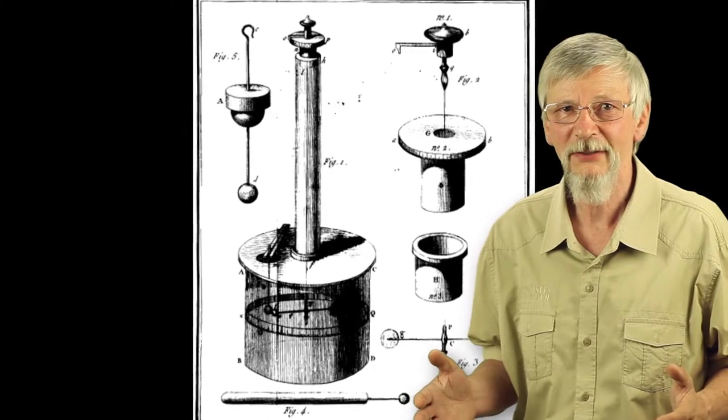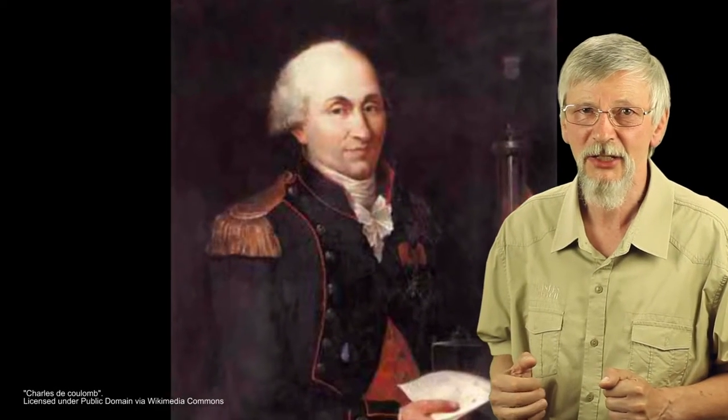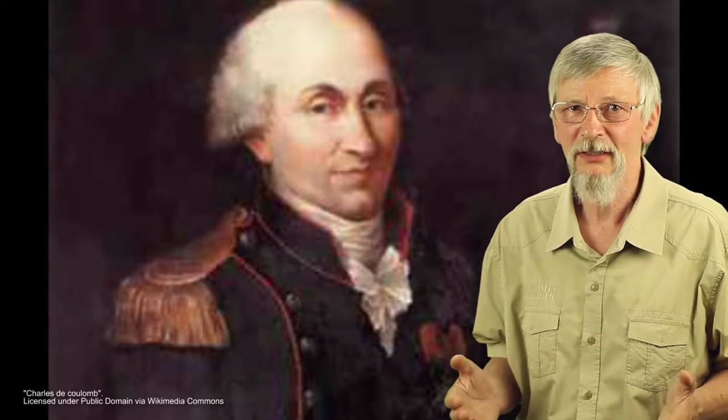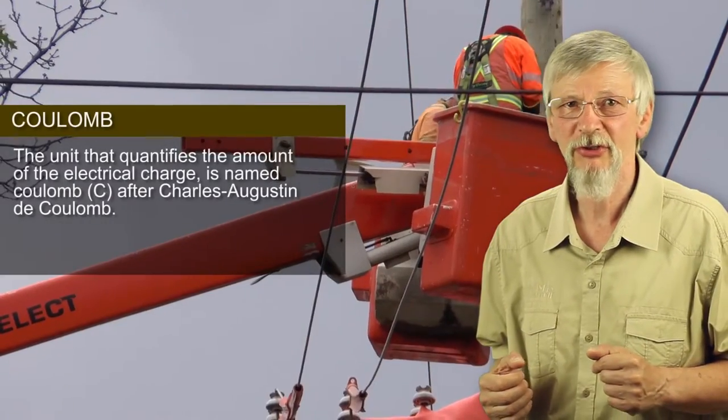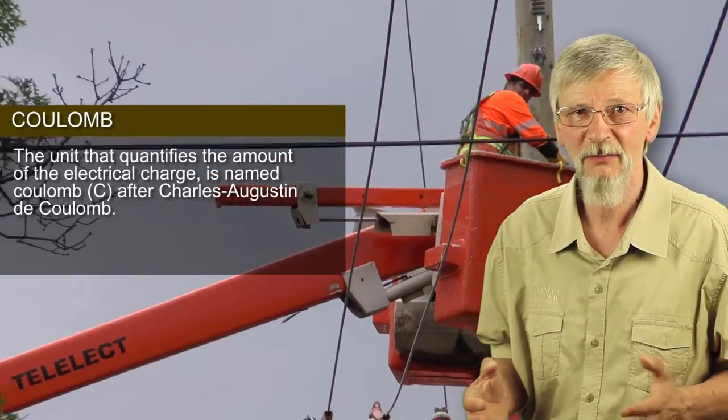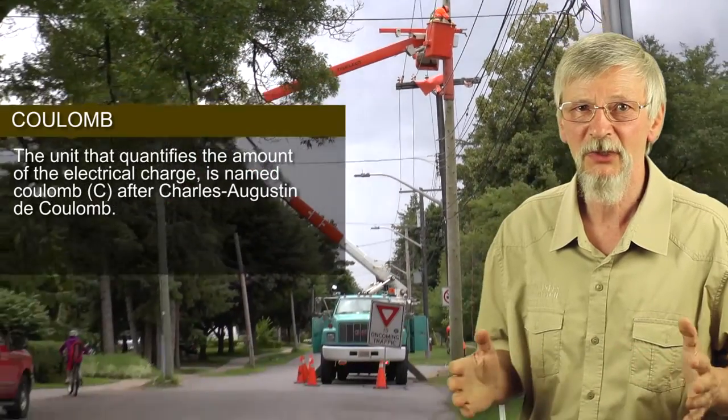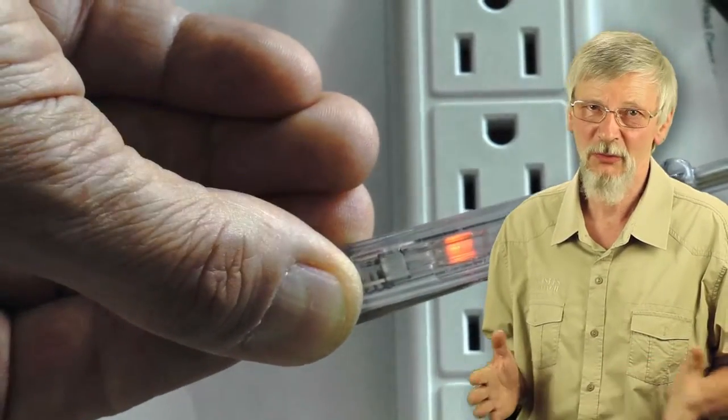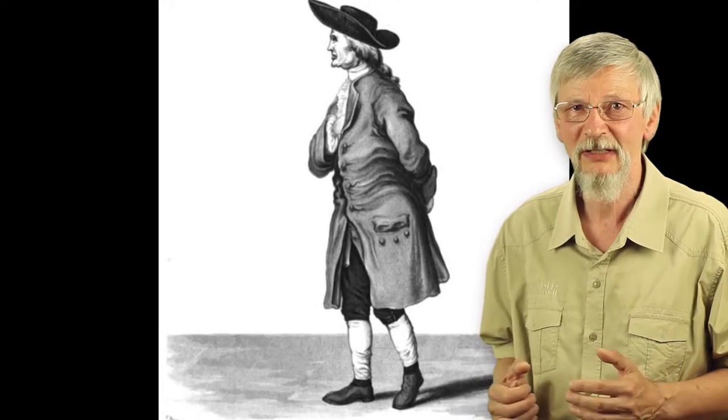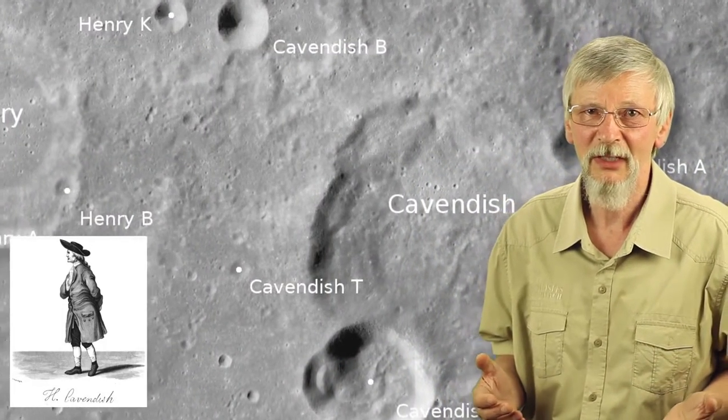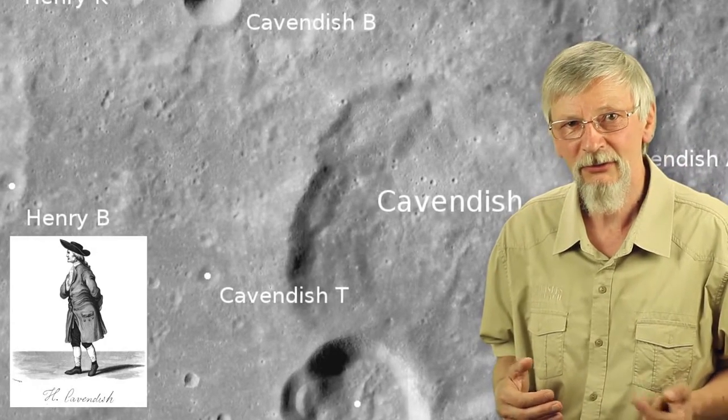It is believed that the systematic study of electrostatics started in the 18th century with the work of the French scientist Charles-Augustin de Coulomb. In particular, he was the one who introduced the notion of electric charge and formulated the law that describes the interaction between electric charges. The unit that quantifies the amount of electricity, namely the electrical charge, is named Coulomb after him. To be fair, we should mention that a British scientist Henry Cavendish also worked on similar problems before Coulomb, but he did not publish this work during his lifetime. It was published by his heirs about 100 years later.